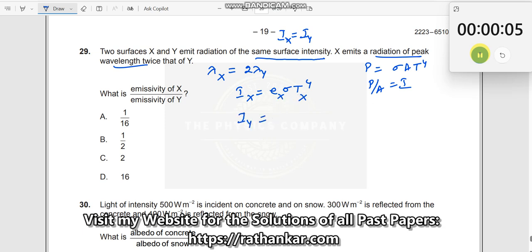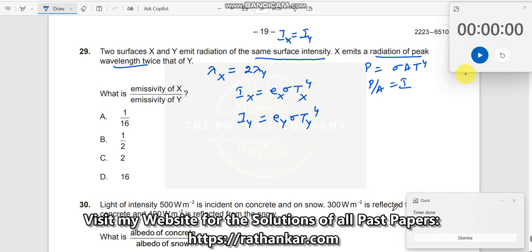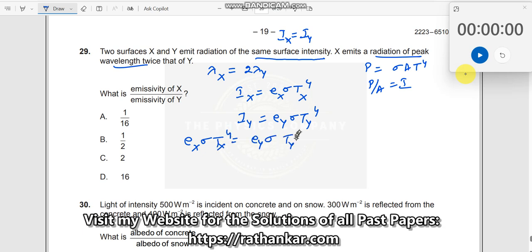Similarly, i y is equal to e y sigma t y to the power of 4. Now, the question here is that, ix equal to i y is already known. So what I will do is, I will just write, e x sigma t x to the power of 4 is equal to e y sigma t y to the power of 4.